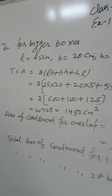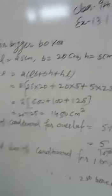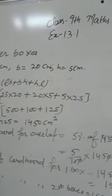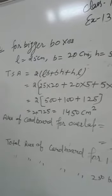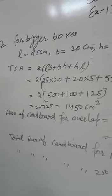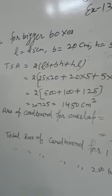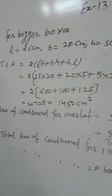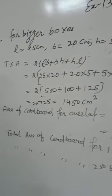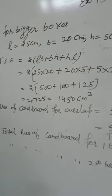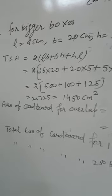Here in this question, we have given 2 types of boxes and dimensions of these boxes also given. It is given that 5% of total surface area is required extra. And we have to find the cost of the cardboard if total 250 boxes of each type is required and cost for 1000 cm square is Rs. 4.